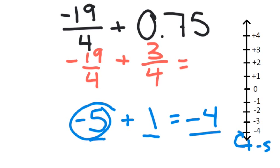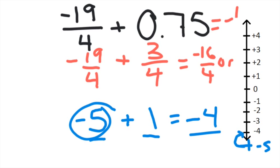So I need to do the same thing for the original problem: negative 19 fourths plus three fourths — I need to subtract them, so I get 16 fourths, and then I make the answer negative because there are more negatives. So it's negative 16 fourths, or just negative four.